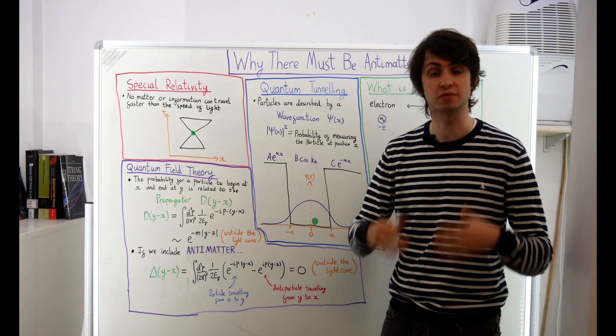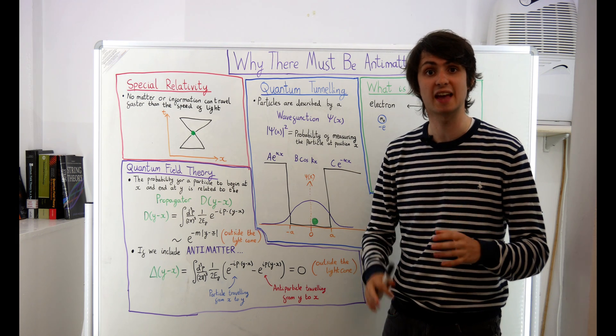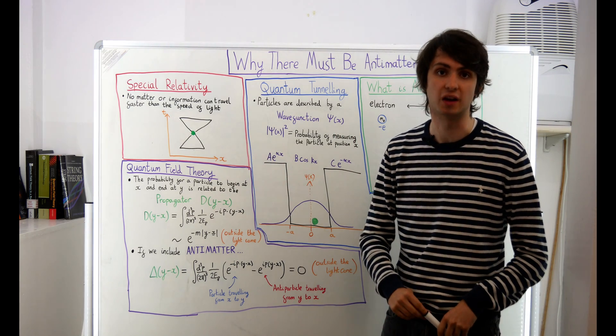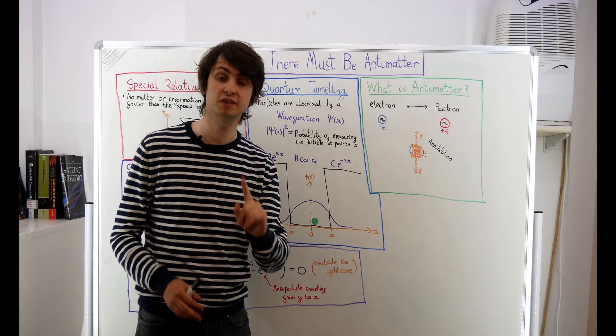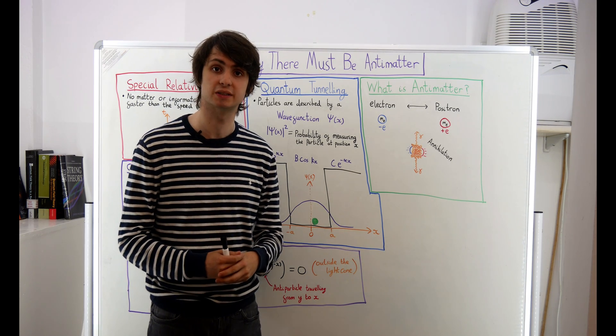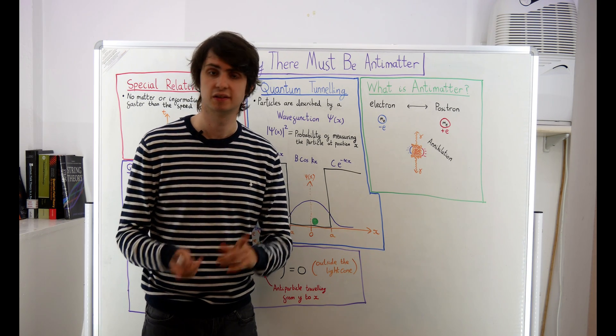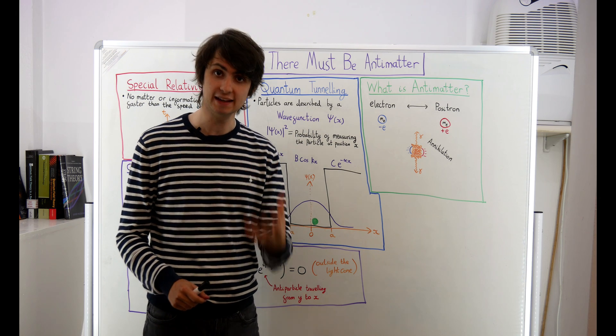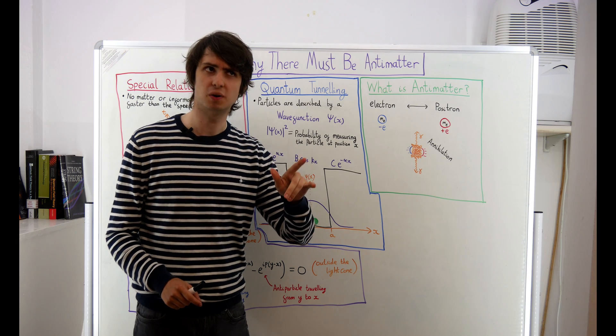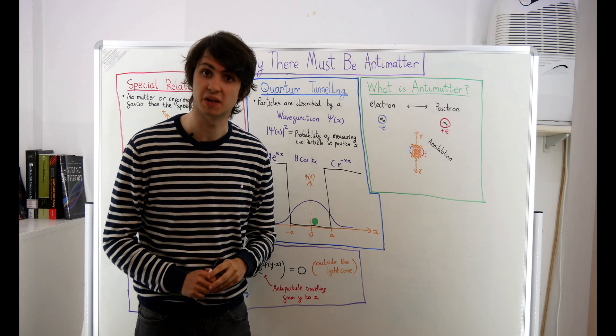The existence of antiparticles then prevents anything from just so happening to travel faster than the speed of light. One last point to mention is whether all particles do indeed have their own antiparticles. The answer is yes and no. All particles have antiparticles, but not all particles have antiparticles that are different from themselves.